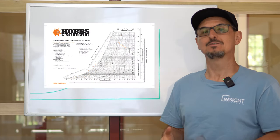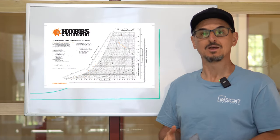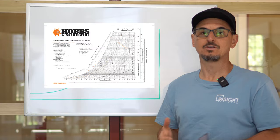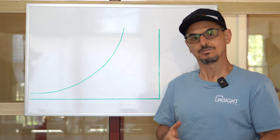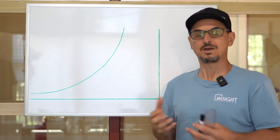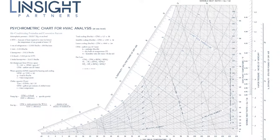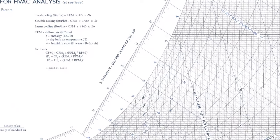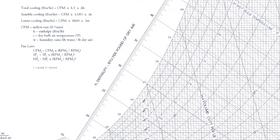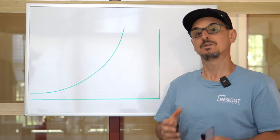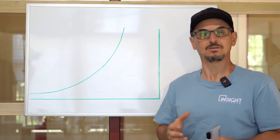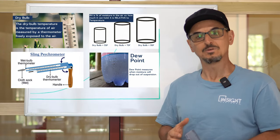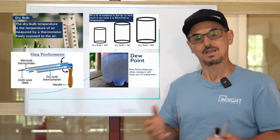In this video, I'm going to walk through and break down the psychometric chart and show you how to read the chart. At first glance, the psychometric chart looks pretty overwhelming. There's a lot of numbers and lines in there, but if you really break it down to its individual components, it's actually very simple once you get the hang of it.